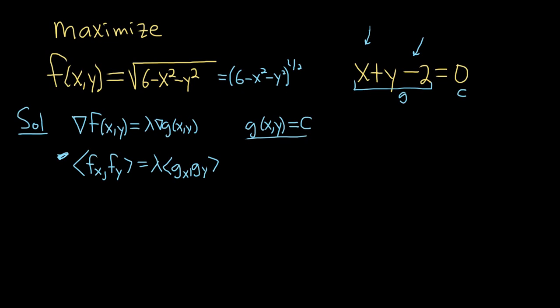I'm going to go ahead and take the partials up here so we don't clutter the problem below. When we take the partial with respect to x, you put the 1 half in the front. We're going to use the chain rule. So 6 minus x squared minus y squared, you subtract 1. So 1 half minus 1 is negative 1 half. And then times the derivative of the inside function. We're taking the derivative with respect to x, so everything is 0 except when we look at the x.